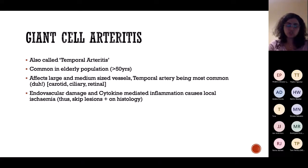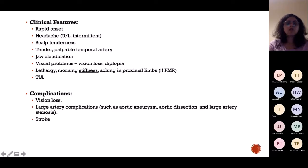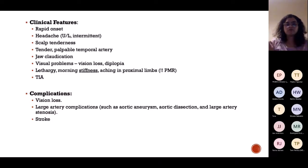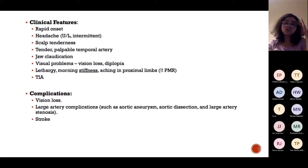We perform a temporal biopsy in GCA to find skip lesions. Clinical features include rapid onset — it is a rheumatological emergency. There will be headache, usually intermittent and on one side. A typical presentation is a 55-year-old female with an unusual kind of headache on the left or right side. On palpation, there is scalp tenderness with a tender, palpable temporal artery. There will also be jaw claudication — pain on moving the jaw.